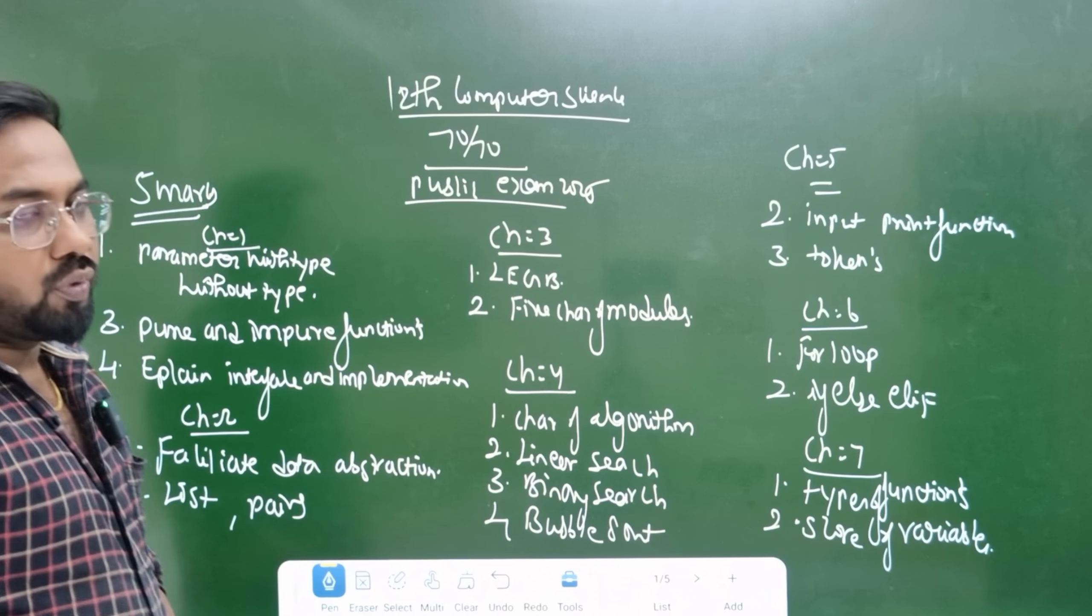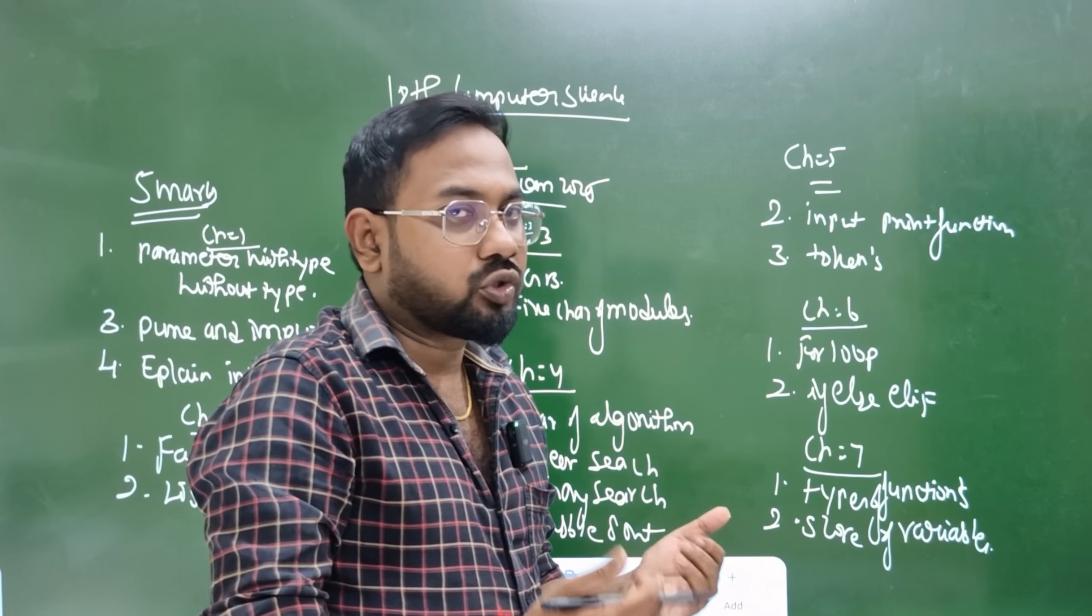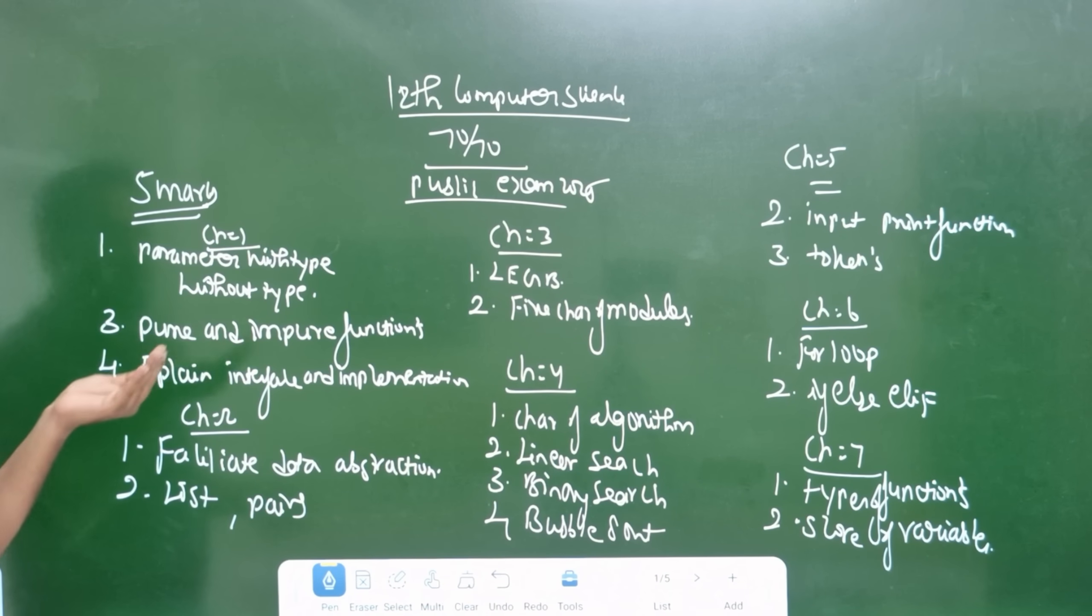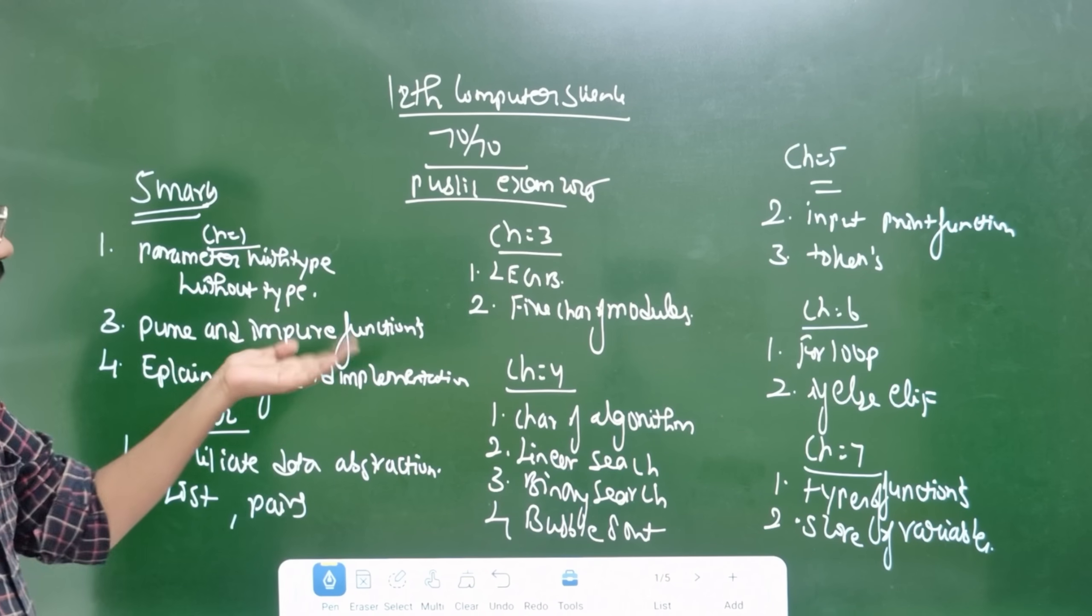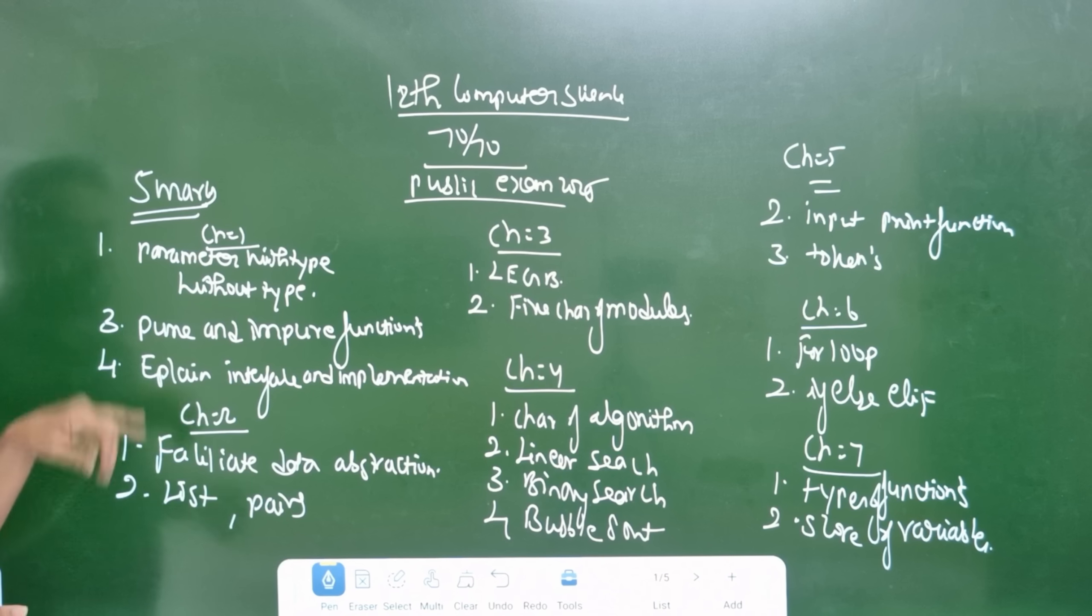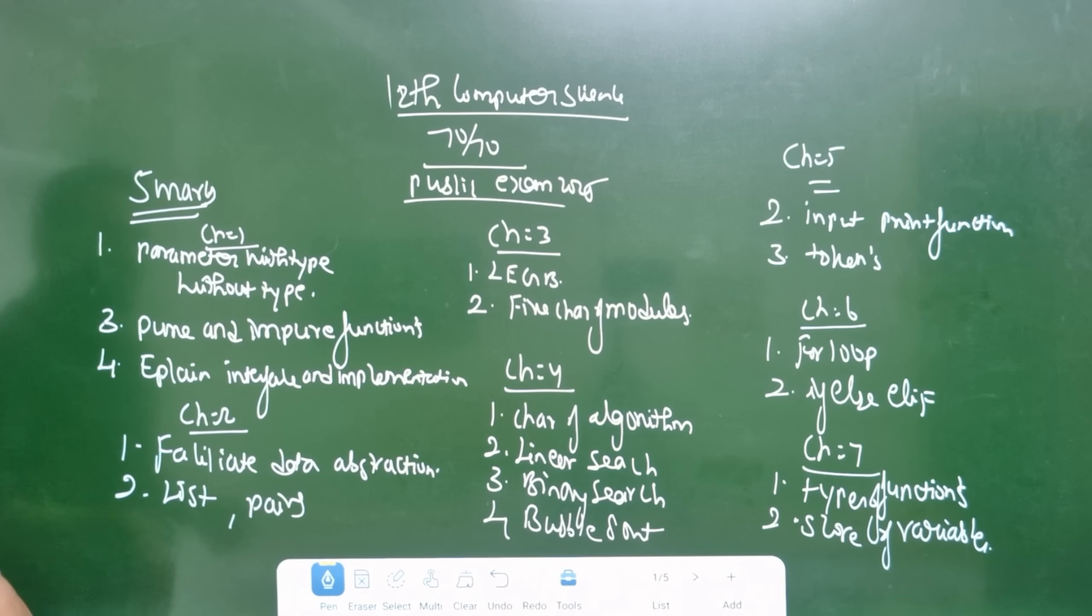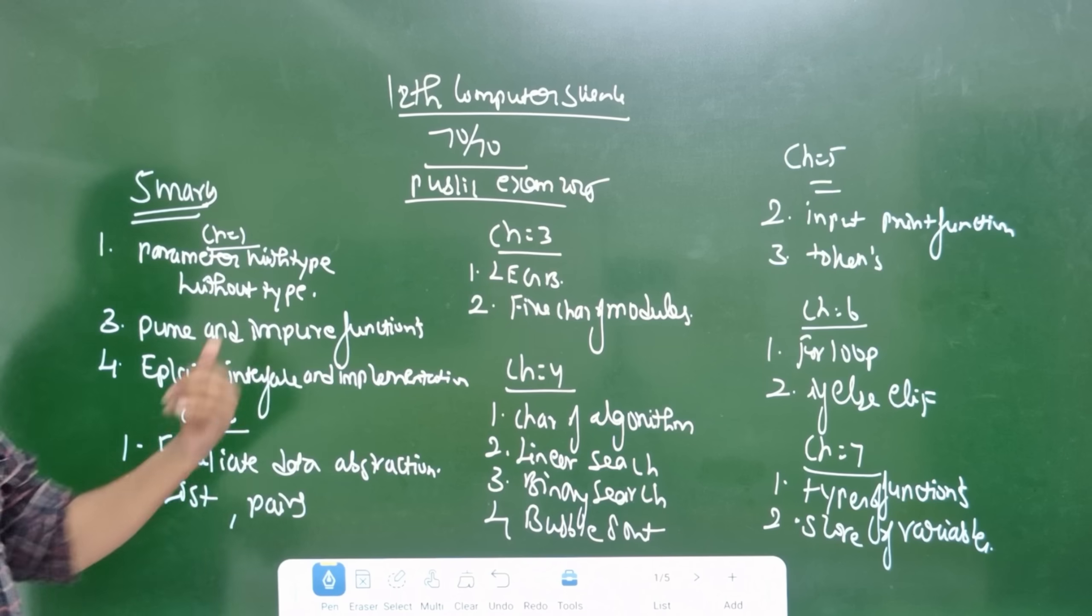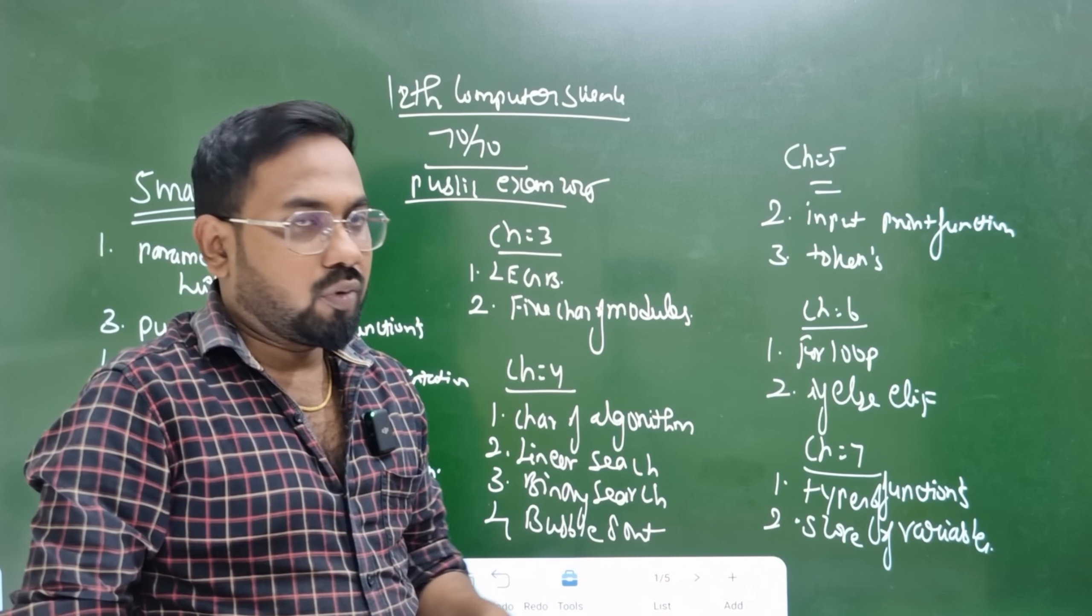Chapter 1 covers parameter with type, pure and impure functions, and explains interface and implementation. Chapter 2 is about data abstraction and list pair. Chapter 3 covers LEGP and modules.